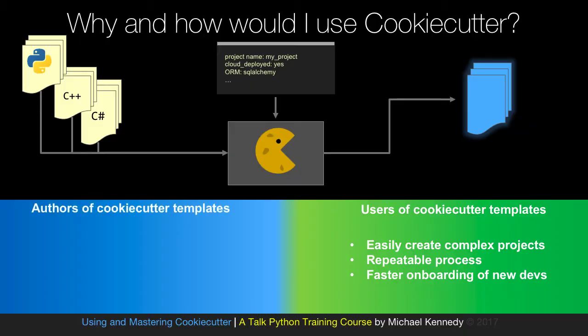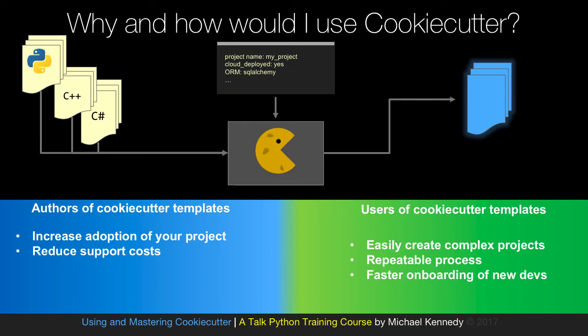On the other hand, you might want to create CookieCutter templates, and we focus a lot on that in this course. Here you'd be able to increase adoption of your project — it's easier and more obvious how to get started. You could also reduce support costs because you no longer have to help users get started; you just say run this one command and they're started.